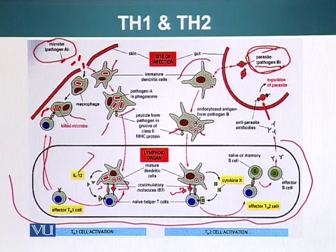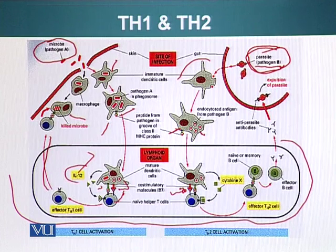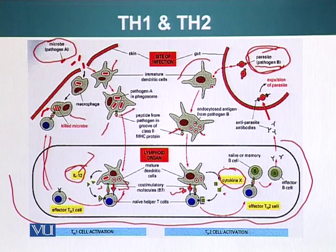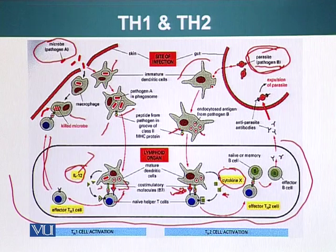Now this dendritic cell can activate the T cell, but in this case our dendritic cell is not producing interleukin-12 as it was doing in the other case. It is producing a different type of signaling molecule, denoted as cytokine X, which could generally be interleukin-4. This signaling molecule — along with the two signals required for T cell activation — guides the T cell into the lineage of effector helper T cell type 2.